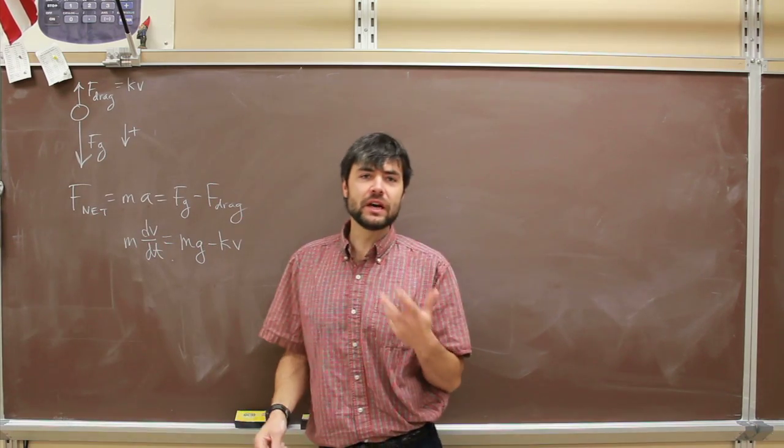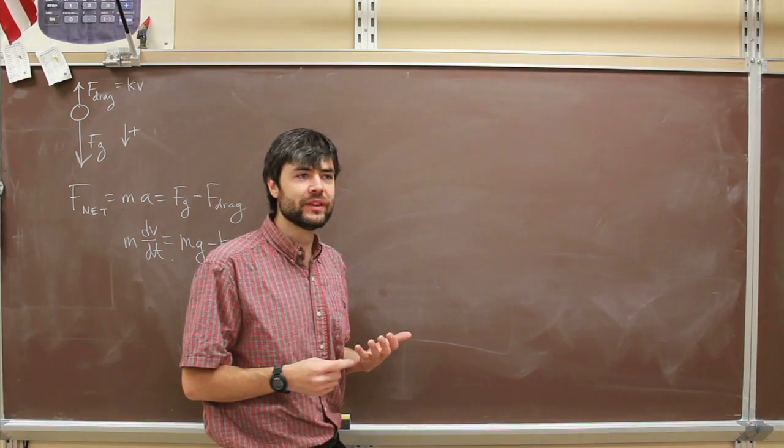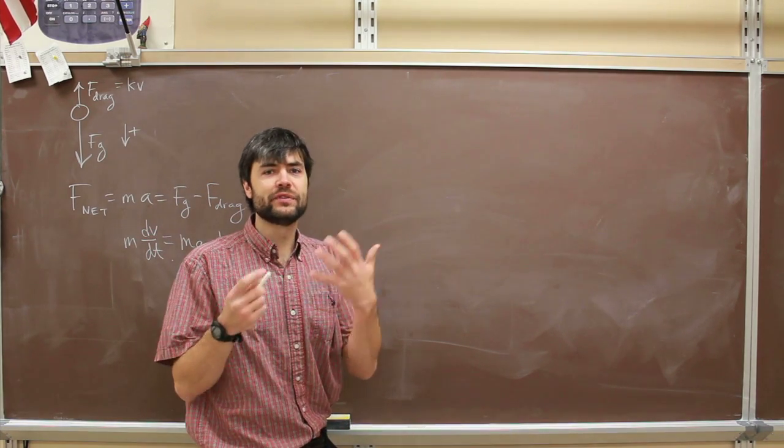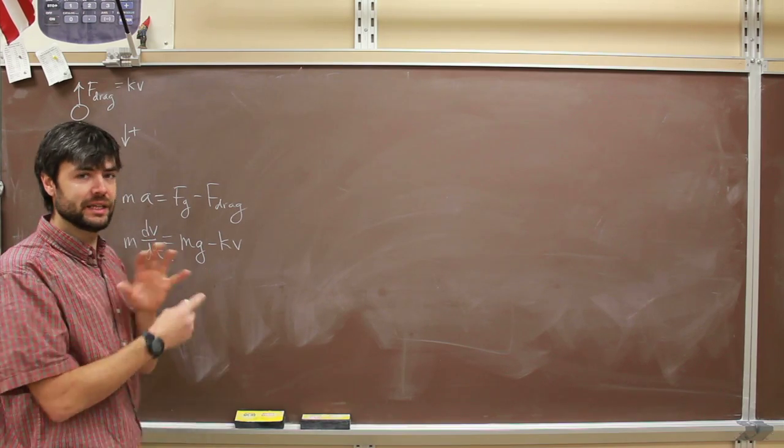So if I want to solve for any velocity, I need to integrate. But to be able to take the integral of this, I've got to get the velocity quantities, v and dv, on the same side of the equation.